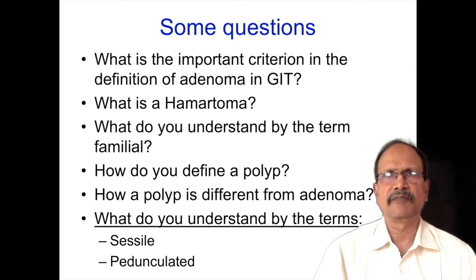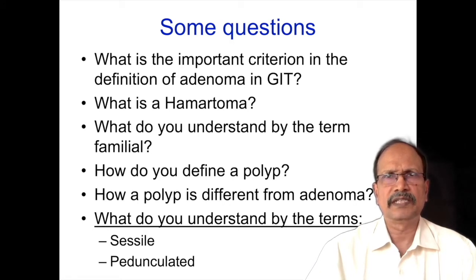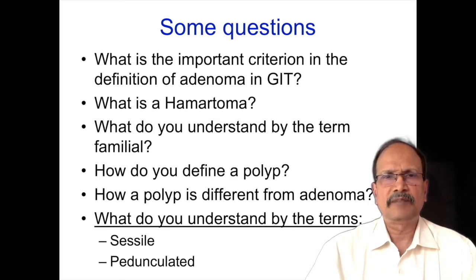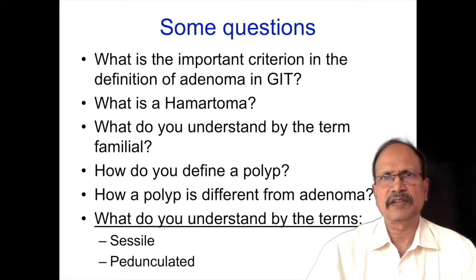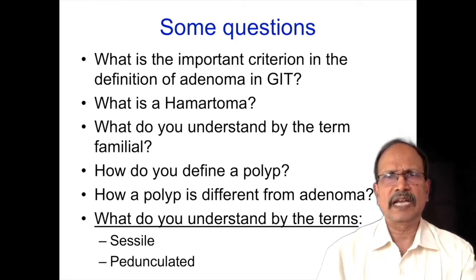Familial occurrence of certain pathologies need not always have a genetic basis. How do you specifically define a polyp? A polyp is anything protruding from the surface, especially in mucosal surfaces — from the surface of the skin, oral cavity, esophagus, or the intestines. How is a polyp different from an adenoma? A polyp is a gross appearance given to a protrusion into the lumen from the surface, whereas an adenoma by definition is a neoplasm arising from glandular tissue.